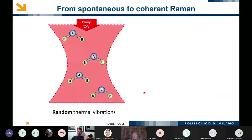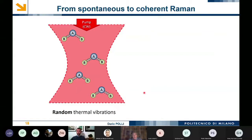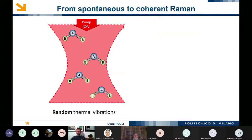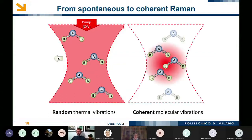I typically use this sketch to explain to my students the difference between spontaneous and coherent Raman. In spontaneous Raman, you have a CW pump — a continuous wave pump — at the beam waist of the sample, and you probe random thermal vibrations. The molecules A and B all oscillate out of phase with each other at a certain frequency omega.